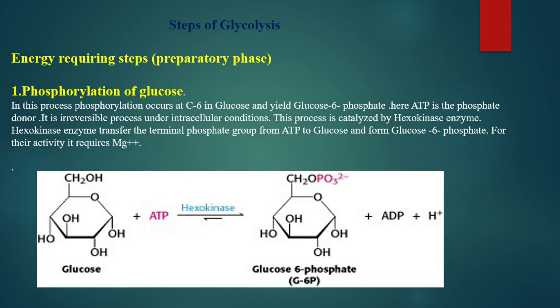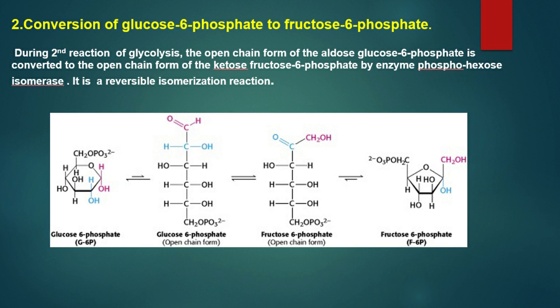Now we start with the preparatory phase of glycolysis. Its first reaction is phosphorylation of glucose. Is reaction mein glucose ke 6th carbon par phosphorylation process hoti hai. Ismein hexokinase enzyme ATP ke terminal phosphate group ka transfer glucose ke 6th carbon par karta hai, jisse glucose se glucose-6-phosphate banta hai. Yah ek irreversible process hai. Second reaction is the conversion of glucose-6-phosphate to fructose-6-phosphate. Is process mein open chain aldose glucose-6-phosphate apne isomeric form ketose, jo ki fructose-6-phosphate hai, mein convert hota hai.